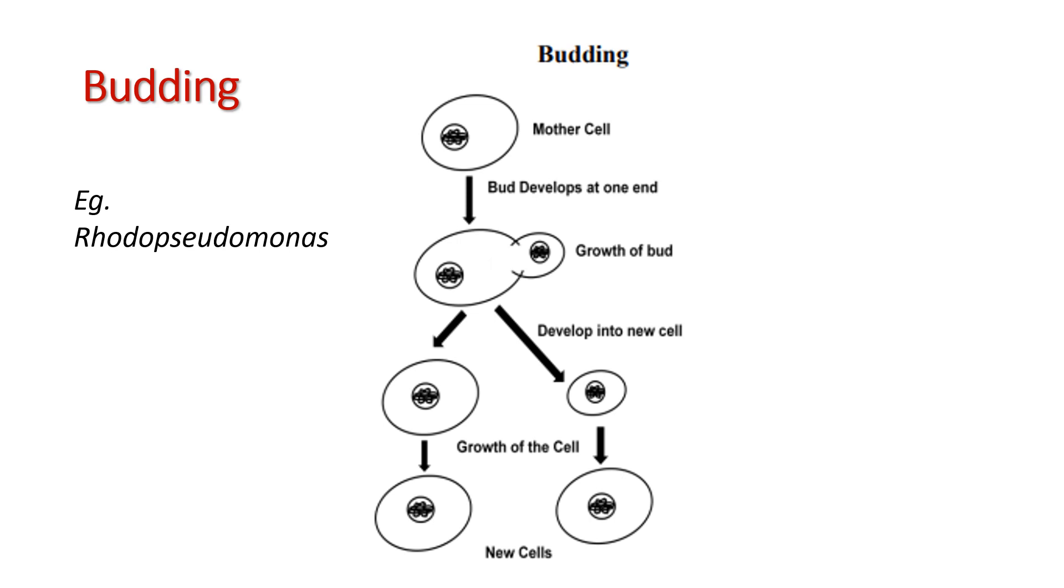Budding: In this mode of cell division, chromosomal DNA divides to form two copies. Sister chromosomal DNA moves to one side of the cell and this portion protrudes from the main body to form a bud. As growth proceeds, the size of the mother cell remains about constant but the bud enlarges. When the bud is about the same size as the mother cell, it separates and develops into a new cell. An example is Rhodopseudomonas.